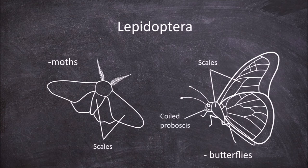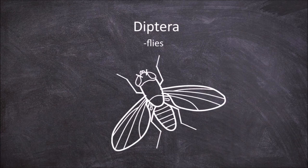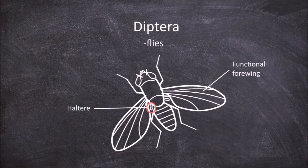The next order is the Diptera, which are the flies. The characteristic feature of this order is the presence of one set of functional wings — the forewings — and hindwings that are reduced into small mechanosensory organs called halteres.